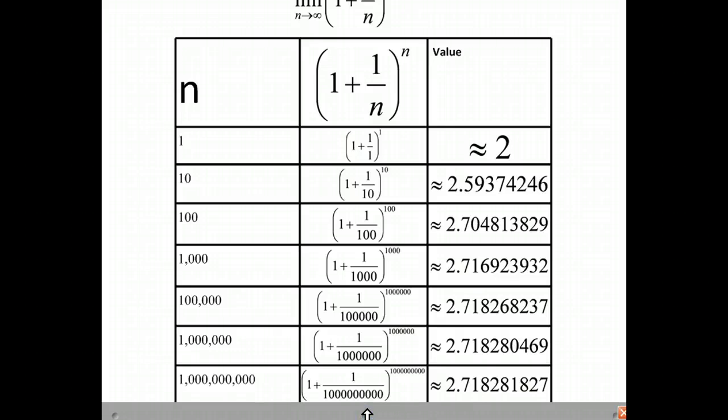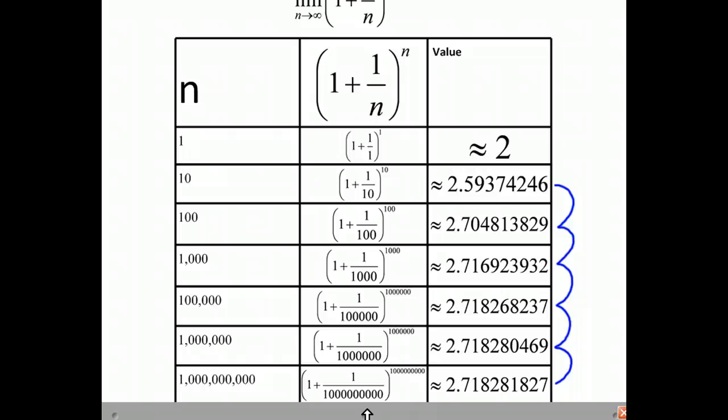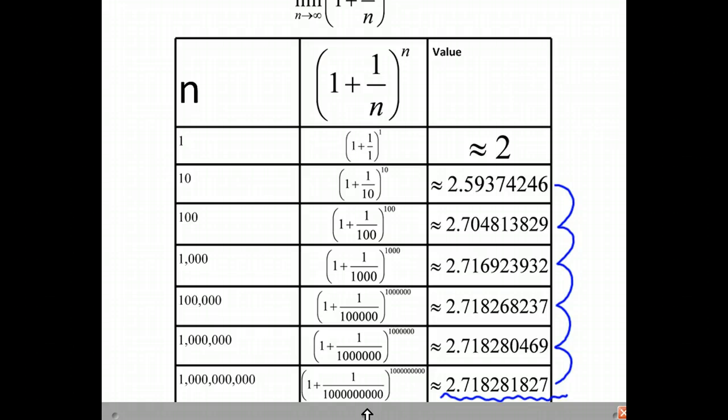And you can see what's happening is our values of n are getting bigger. Our values of e get bigger too. But what's happening is they're getting bigger, but there's a limit to how big they can get. And e seems to be settling around this value, 2.718281827.